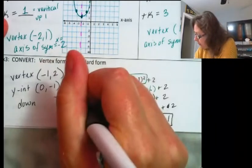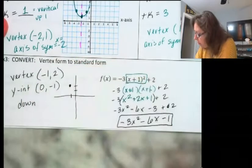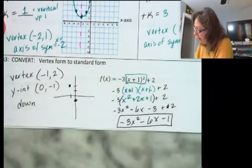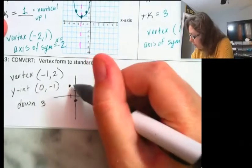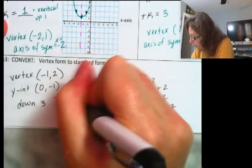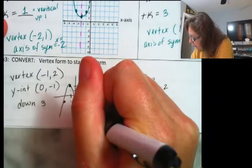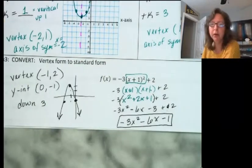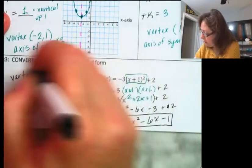If I were to graph this, the vertex is at negative 1, and my y-intercept is at (0, negative 1). I'm going down by 3 — so watch this: over 1, down 3. And that gives me the other point. You can graph this super easily with all the information you have here.